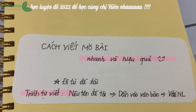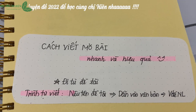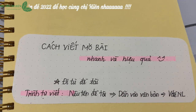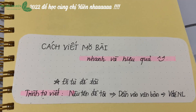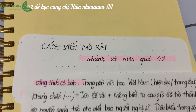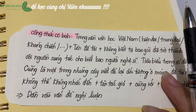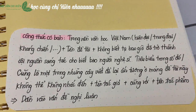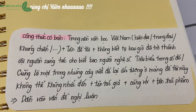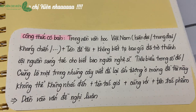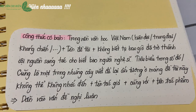Ngay bây giờ chị sẽ đưa cho các bạn 2 công thức cơ bản để các bạn có thể áp dụng ngay vào phần mở bài của mình. Đây là công thức đầu tiên - công thức cơ bản của phần dẫn dắt đi từ nội dung đề tài. Nói về mở bài thì chúng mình có 2 hình thức: mở bài trực tiếp và mở bài gián tiếp.